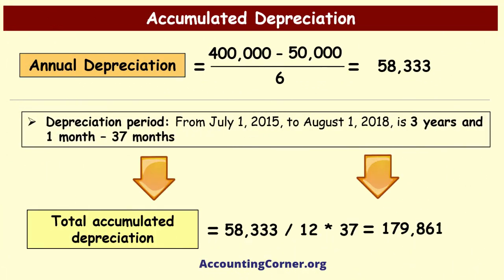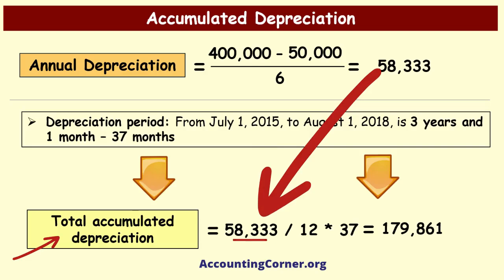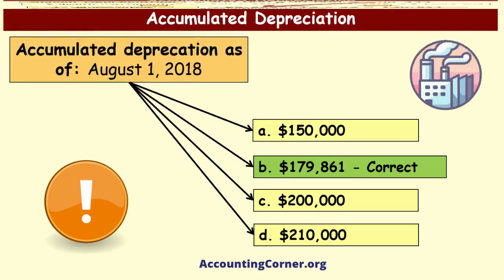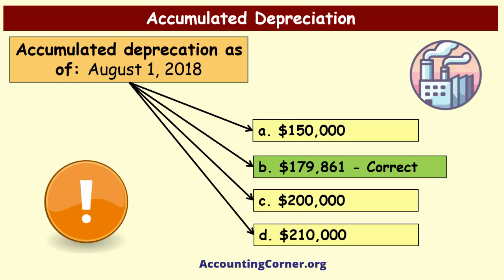To calculate depreciation for 37 months, which will be the accumulated depreciation as of the sales date, we take the annual depreciation of fifty-eight thousand three hundred thirty-three dollars, divide it by 12 months to get monthly depreciation, and multiply by 37 months. Total accumulated depreciation as of the asset sales date is one hundred seventy-nine thousand eight hundred sixty-one dollars. Therefore, the correct answer is option B: $179,861.